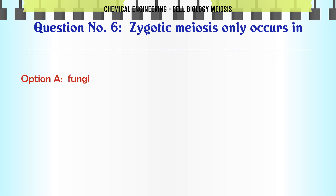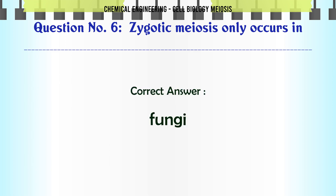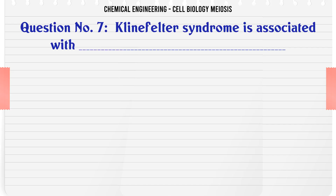Zygotic meiosis only occurs in: A. Fungi. B. Monera. C. Vertebrates. D. Mammals. The correct answer is Fungi.